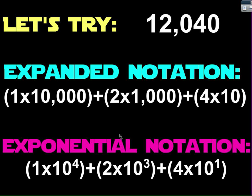The 2 times 1,000 would be 2 times 10 to the 3rd power because of the three zeros. And 4 times 10 would be 4 times 10 to the 1st power because there's just one zero. So exponential notation is exactly like expanded notation, except you're using exponents. That's why they call it exponential.